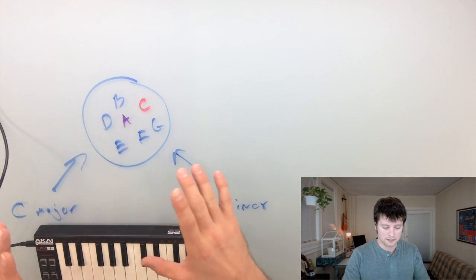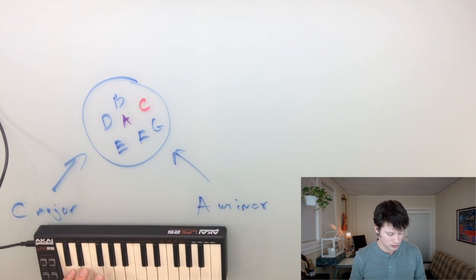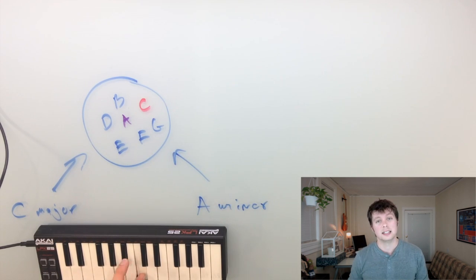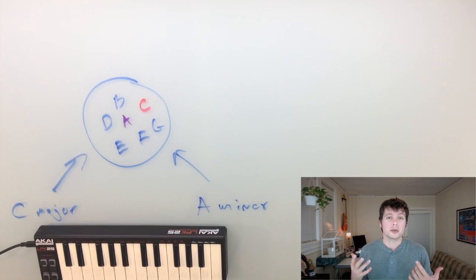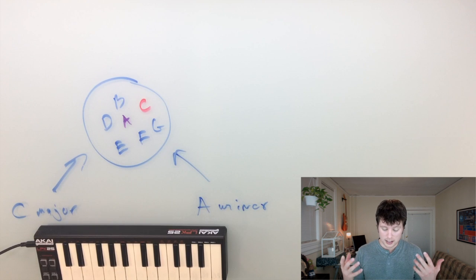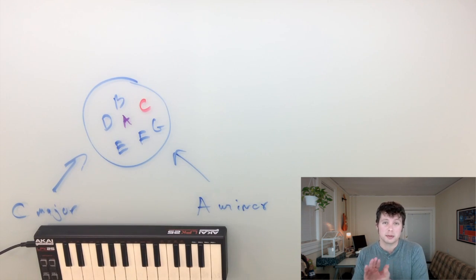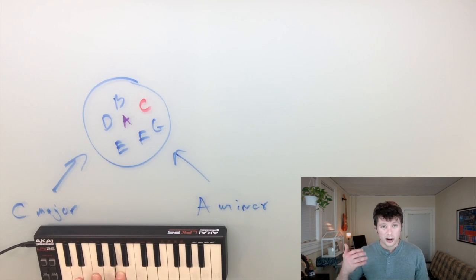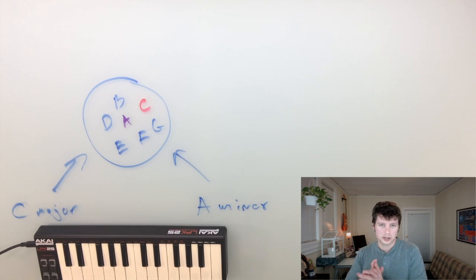Now let's go back to the C major example. If I start on C and play these seven notes, there's this little half step right here leading into C. It makes it very easy to have C sound like the key center. Obviously there must be more to it than just that, because if we're trying to write a song in A minor, we don't have that half step leading into the A — no half step coming to that A. So we don't have that benefit of that sort of resolution sound.